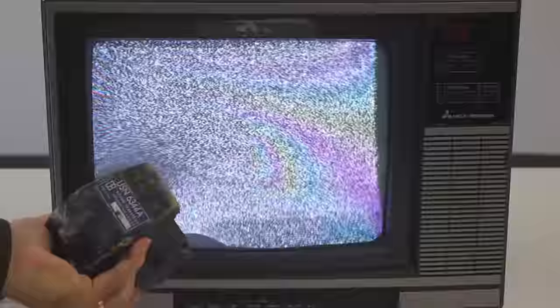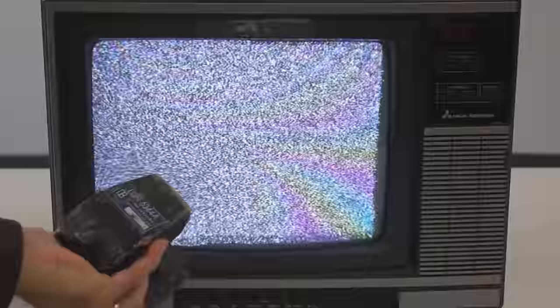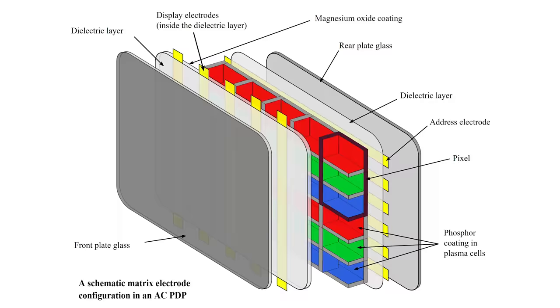Then after that, plasma TVs were invented. They used fluorescent lights in the primary colors of red, green, and blue. But even though plasma TVs were better, they were still rather large and they lacked the resolution and color that modern TVs have.